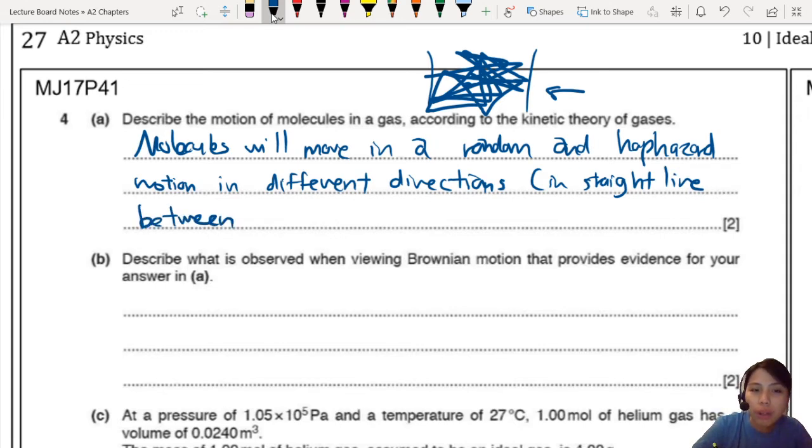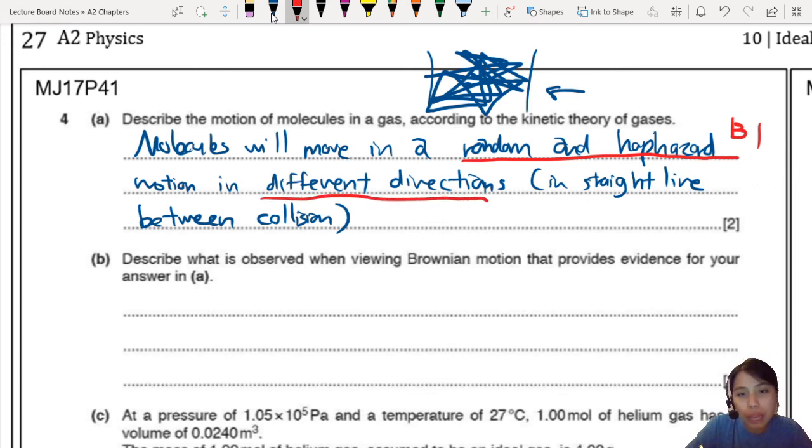Collisions with who? Collisions either with the wall or with another particle that is flying close enough. So if you look at the mark scheme, there's two marks here. One is a very important keyword, random and/or haphazard. So haphazard means like random. And also in different directions can also gain you another mark. Also, actually the straight line here between collisions also can get you another mark. So all these things are the terms that describe Brownian motion. So make sure you've got those down.